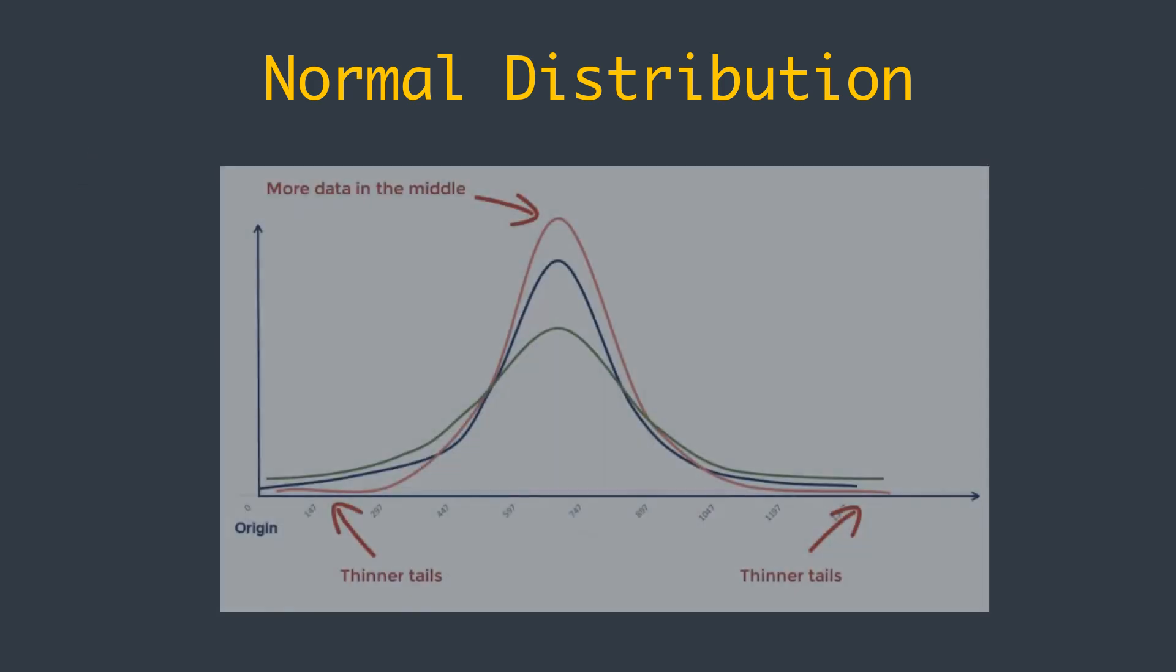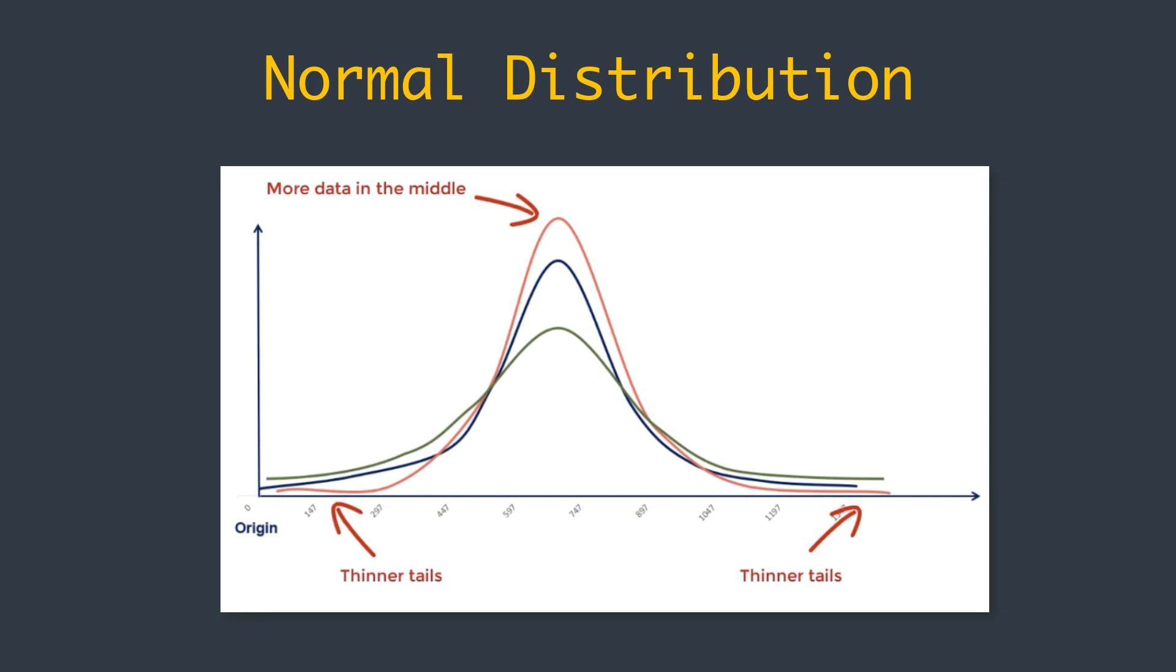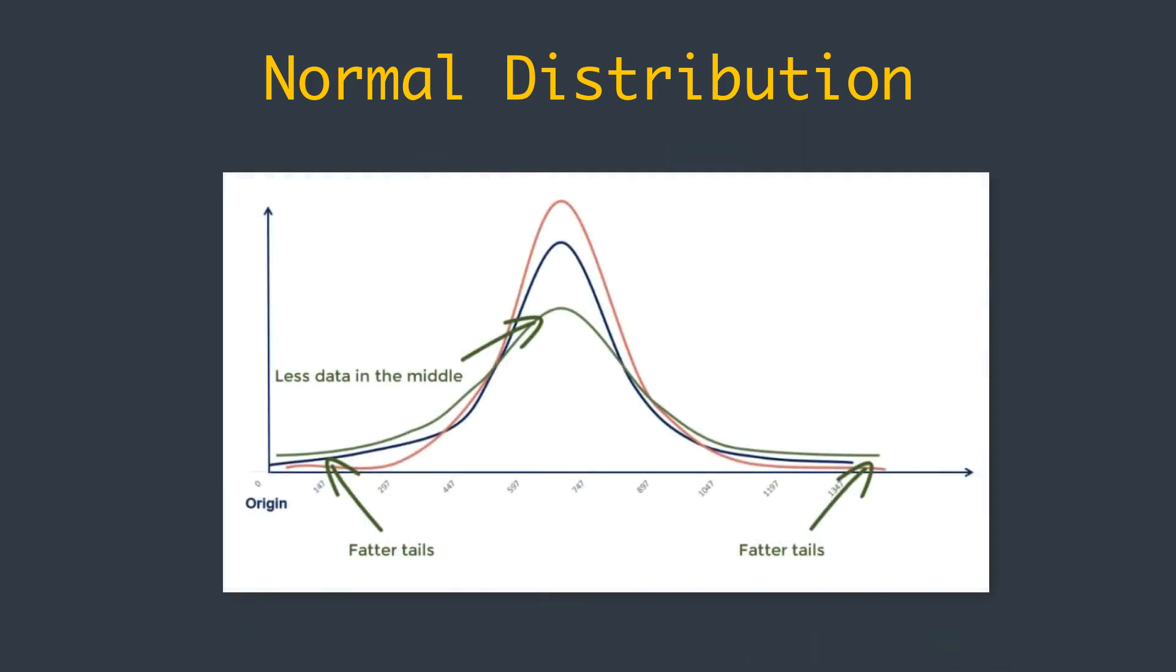A lower standard deviation results in a lower dispersion, so more data in the middle and thinner tails. On the other hand, a higher standard deviation will cause the graph to flatten out with fewer points in the middle and more to the end.